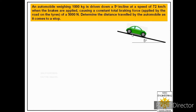We are given an automobile weighing 1000 kilograms driven down an inclined surface with an angle of inclination of 5 degrees. The automobile is moving at a velocity of 72 km/h, and at that velocity brakes were applied causing a constant braking force of 5000 Newtons acting in the upper direction along the incline. We have to find what distance this vehicle will travel before it comes to a stop.